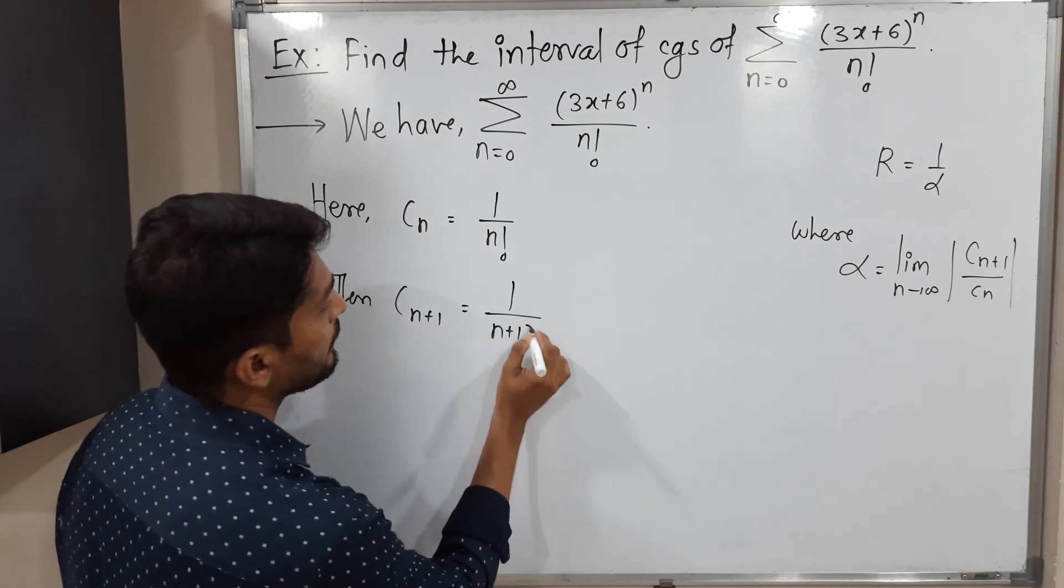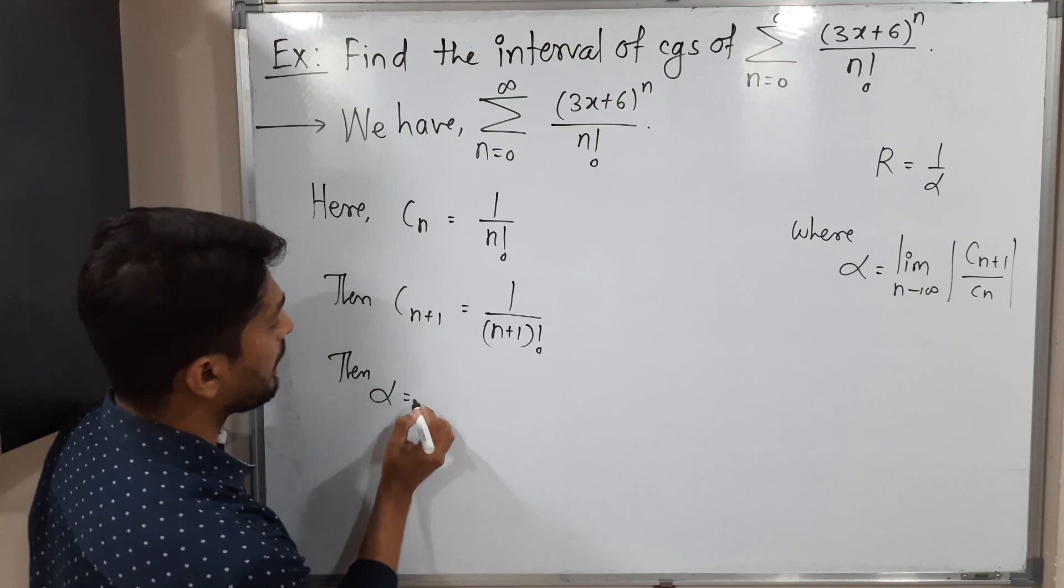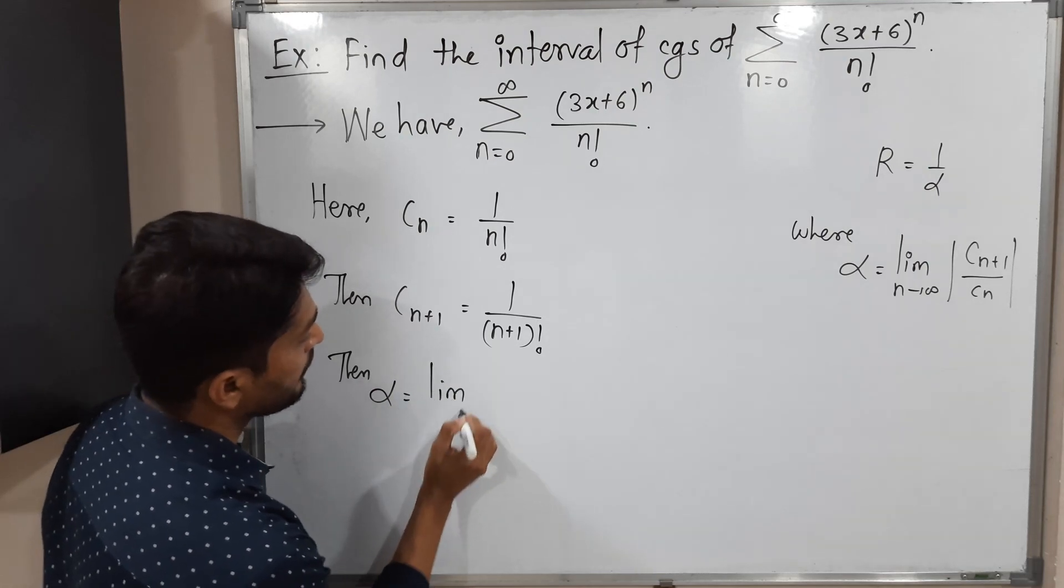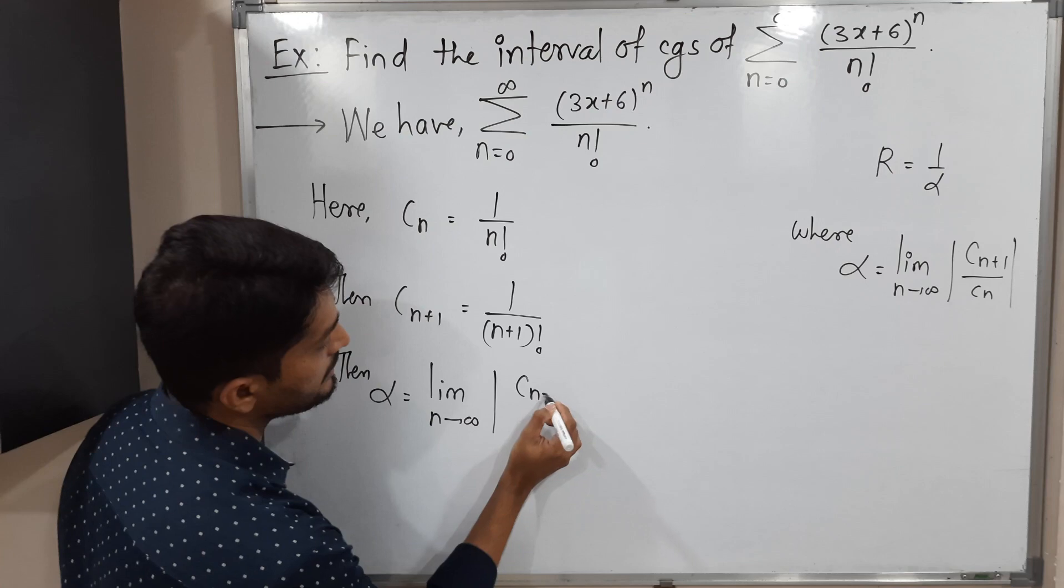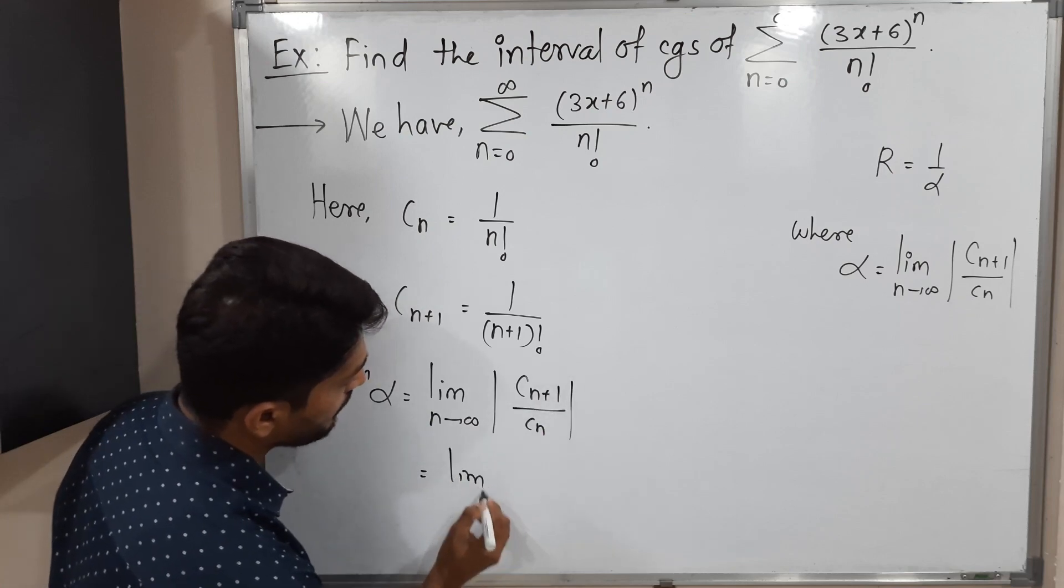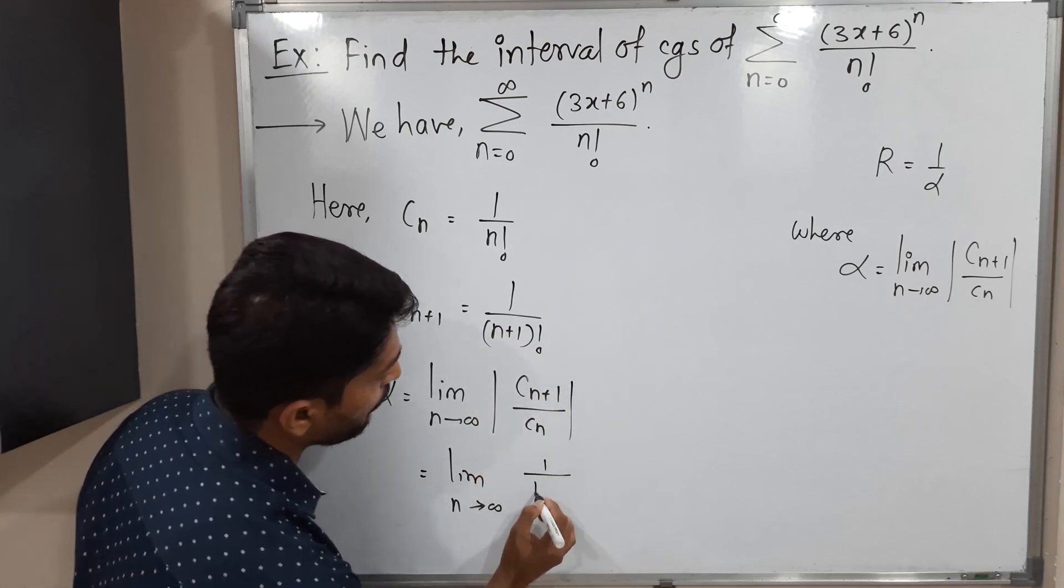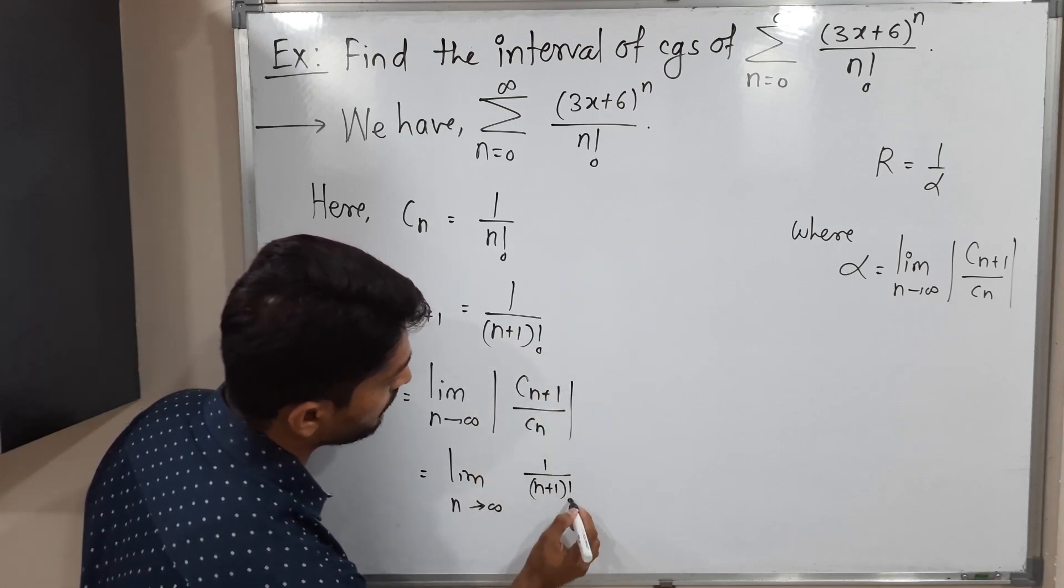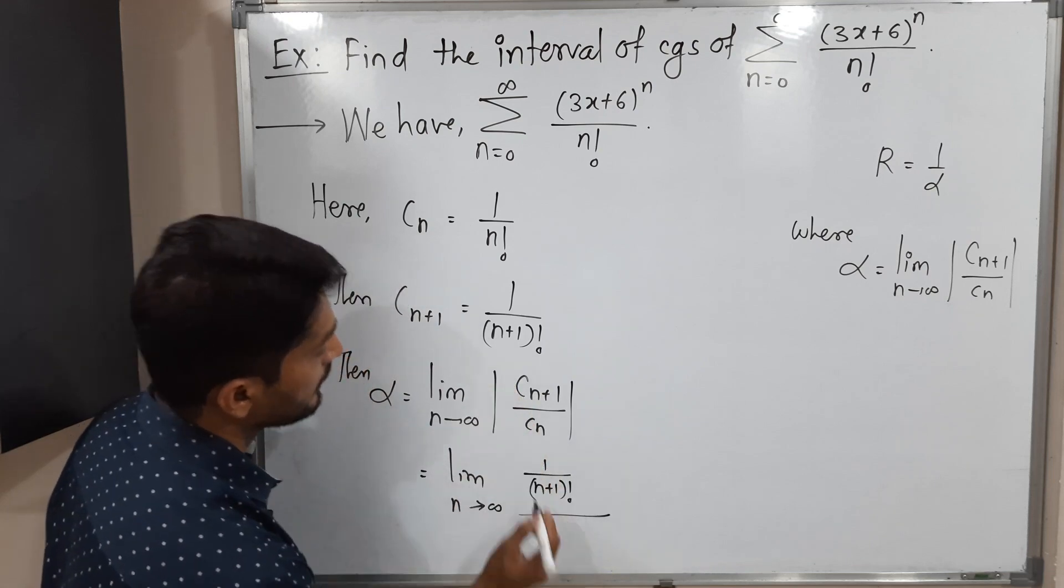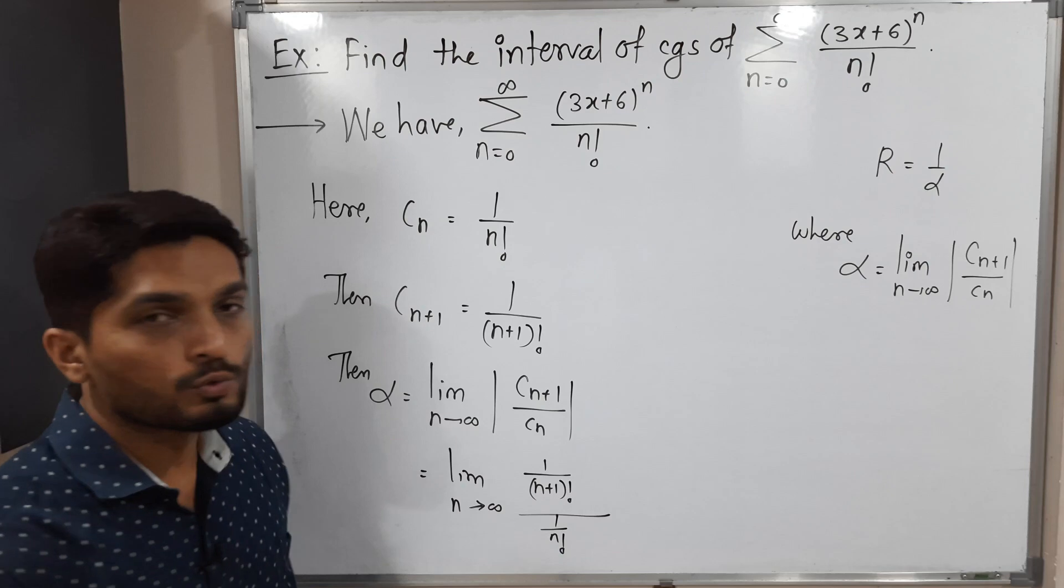Let us find alpha. Alpha is equal to limit n tends to infinity mod cn plus 1 upon cn. I am putting the values: limit n tends to infinity, cn plus 1 is 1 upon n plus 1 factorial, and cn is 1 by n factorial.